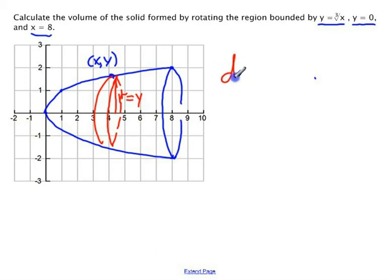So the volume of my disk is pi y squared, and the height of the cylinder is dx. Now, since it's dx, that means I need to write y squared in terms of x.